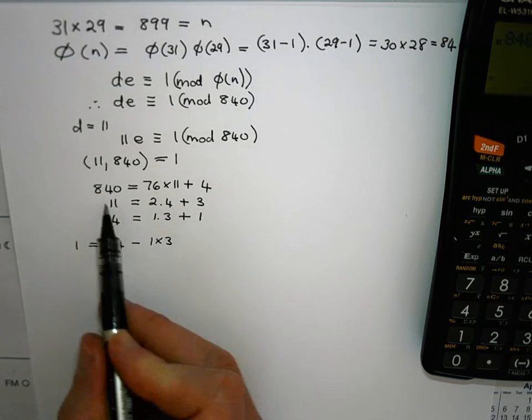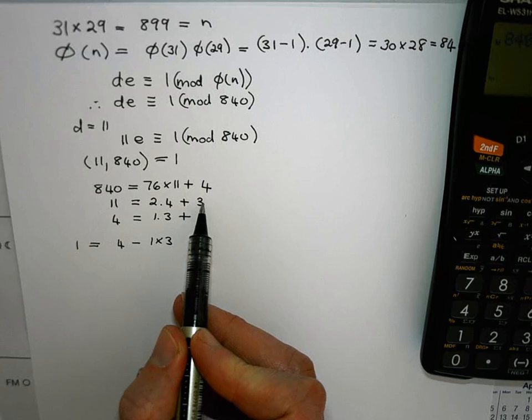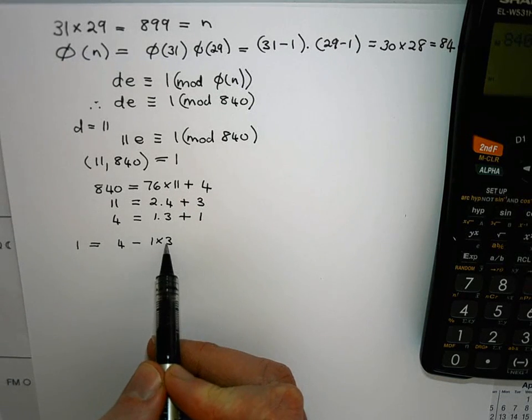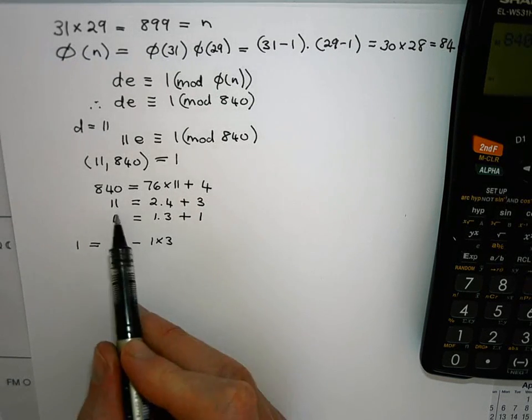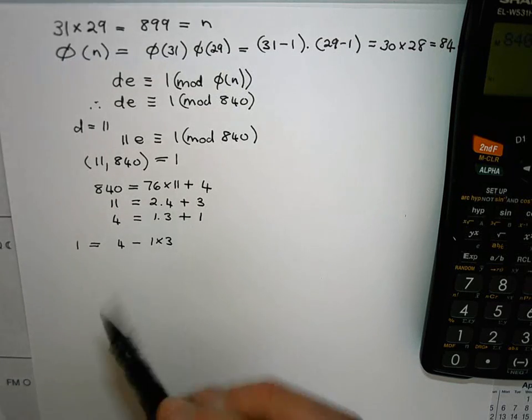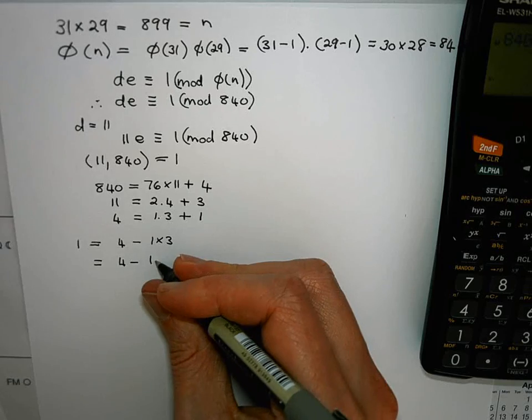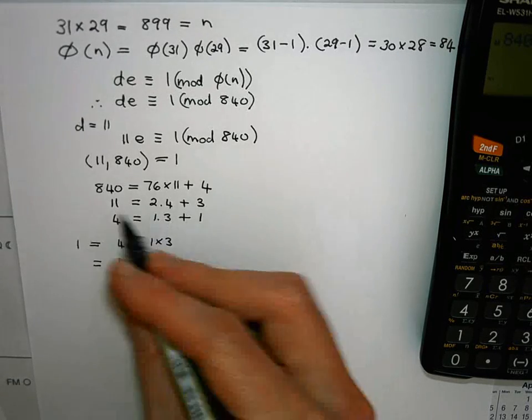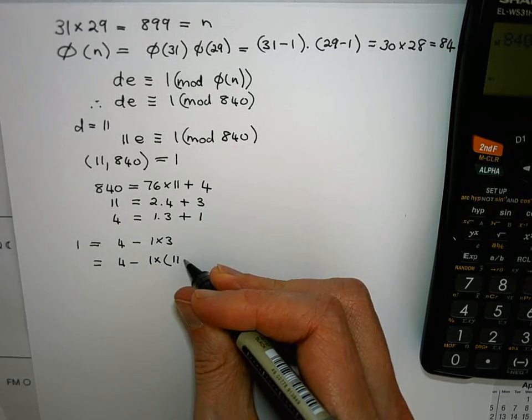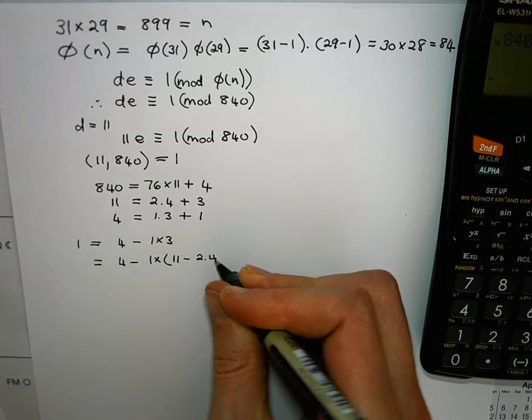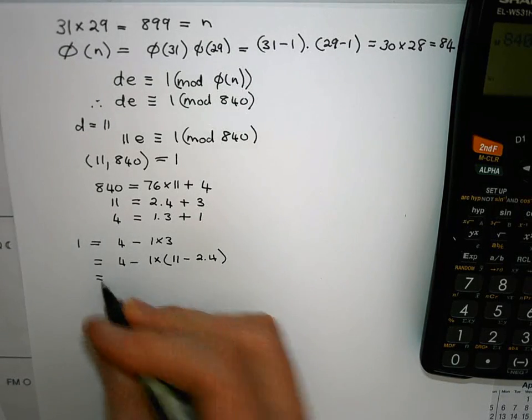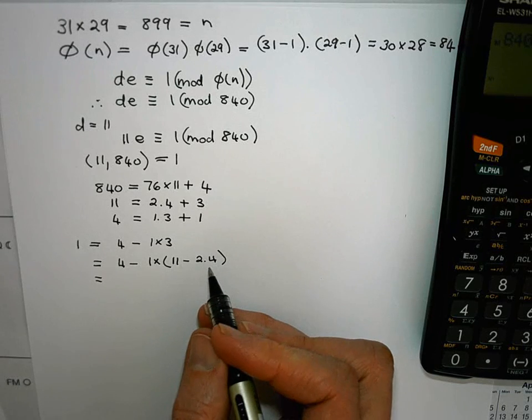Now the next equation I can make 3 the subject of the equation and that will allow me to rewrite this 3 here in terms of 11 and 4. So I'm going to say well this gives me 4 minus 1 times, and 3 I can write as 11 minus 2 times 4.